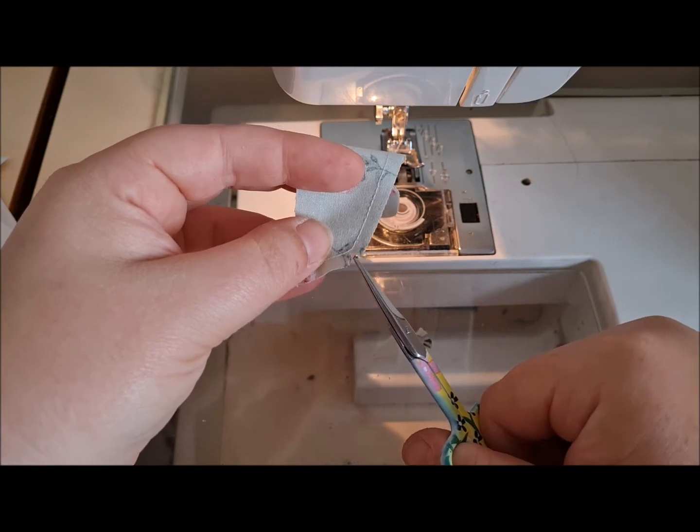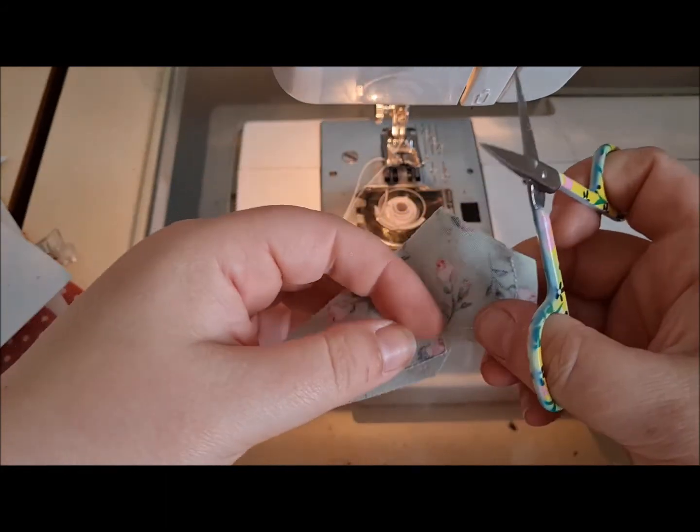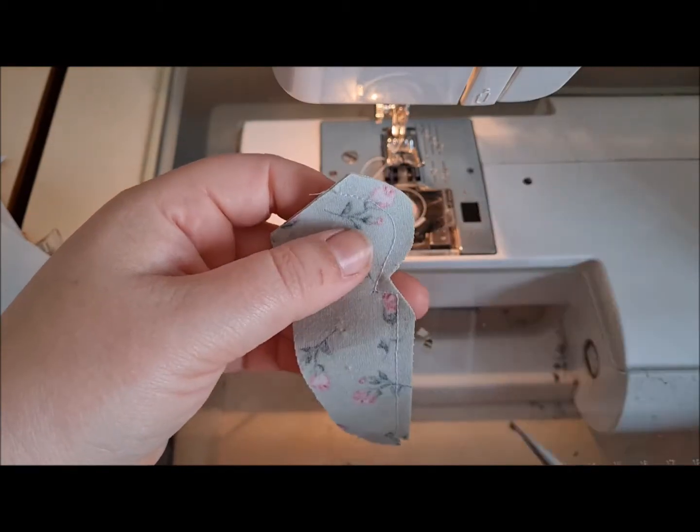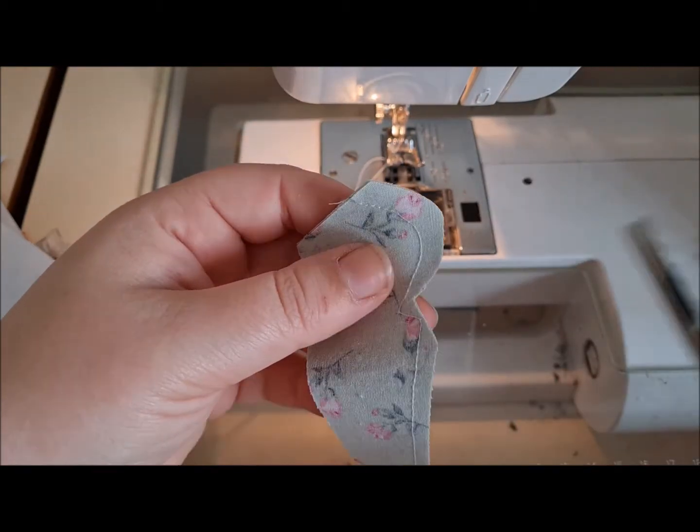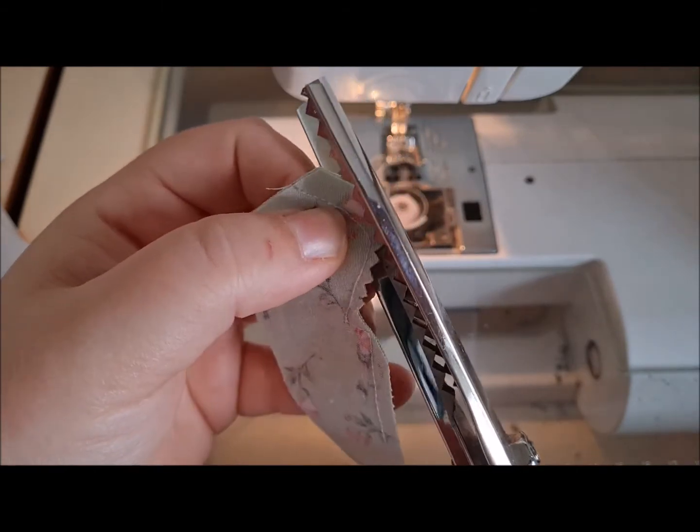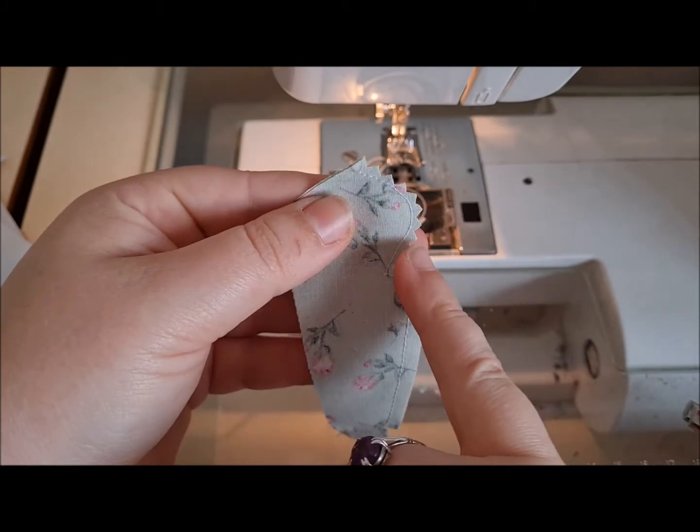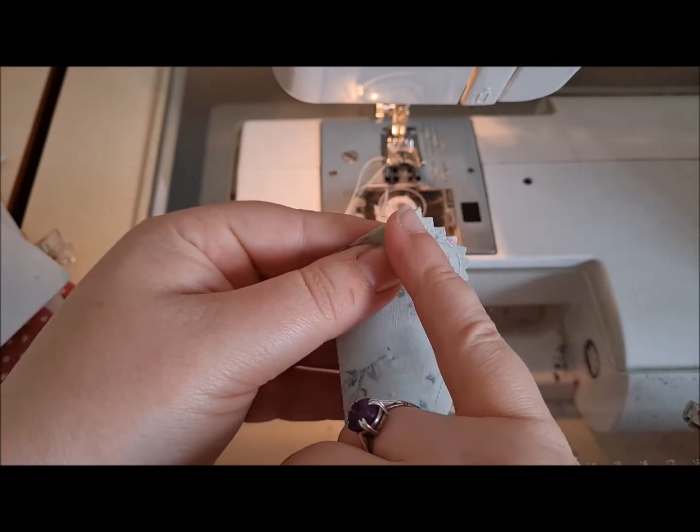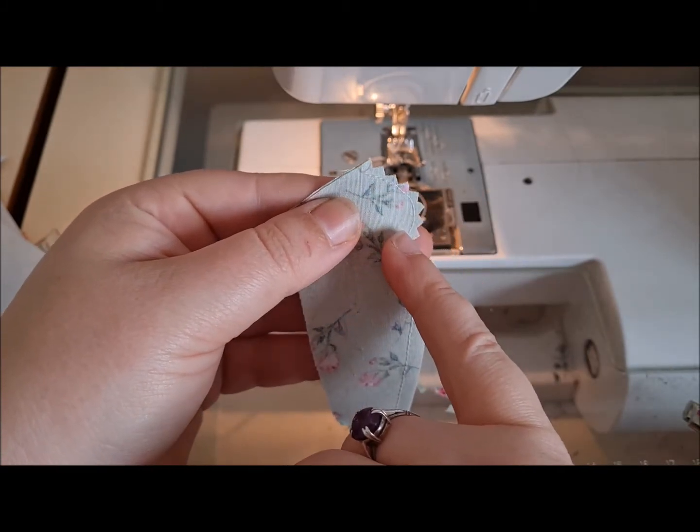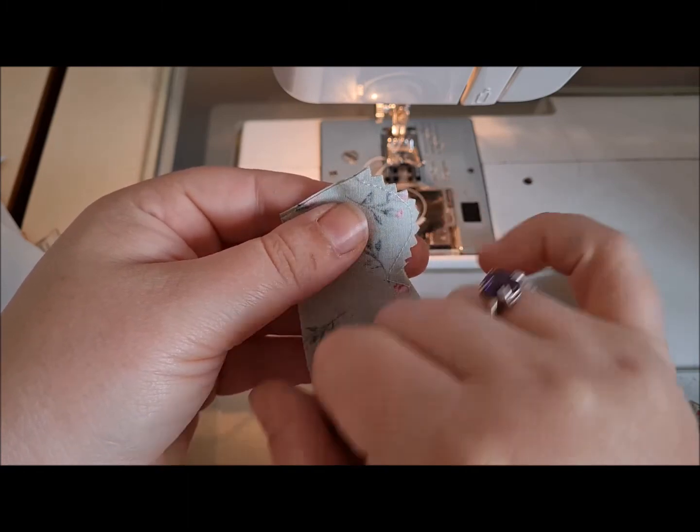When you fold it right way out, this part of material we removed would bunch up and stop you having a nice flat corner. Then on this curve, I like to get my pinking shears and just take out the excess fabric. This is like cutting notches so you can bend the fabric around the corner.